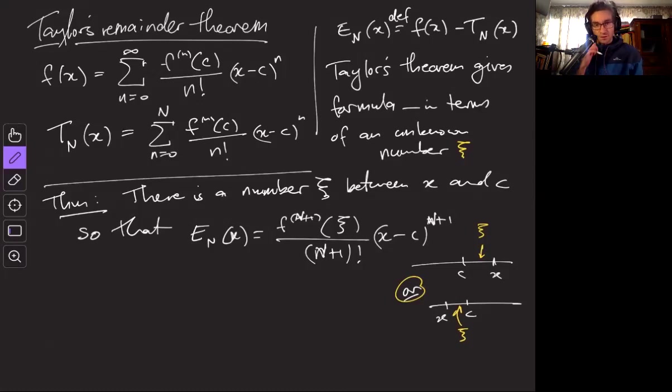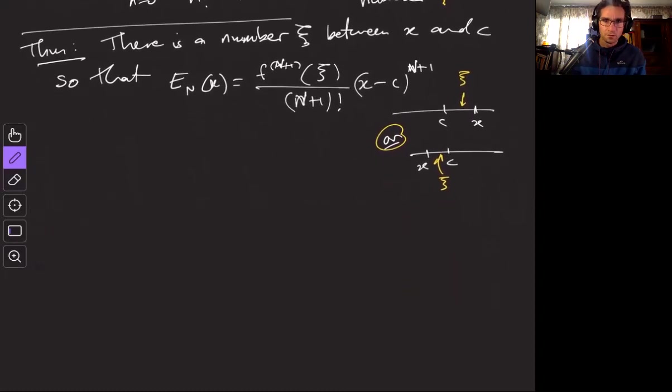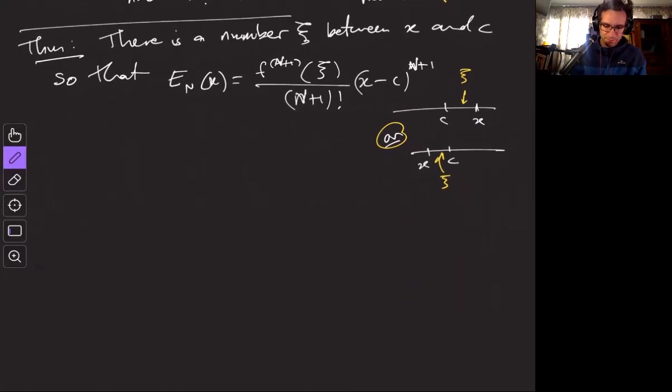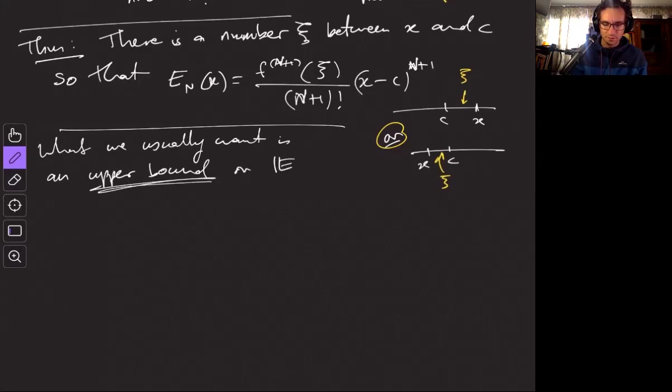This is fine but what we want to do usually is not actually get exactly what this error is, we want to estimate this error. What we usually want is an upper bound on the absolute value of the error. So we don't care if it's positive or negative, we just want to say is the error at most like 10 to the minus 6 or something like this.